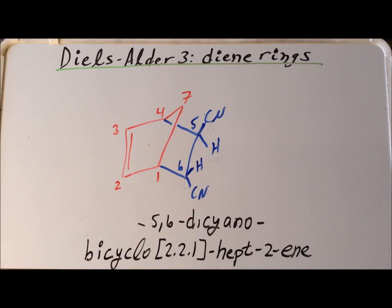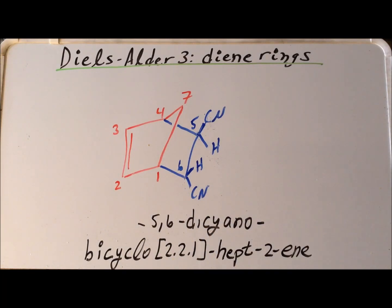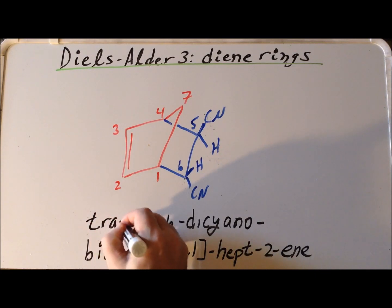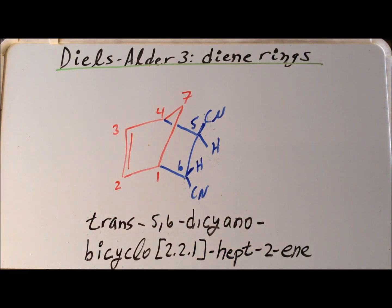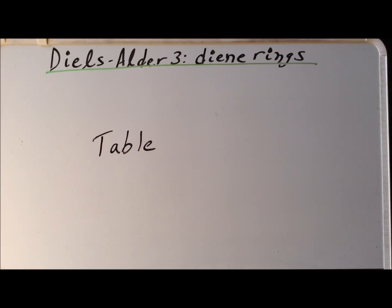If our dienophile is trans-1,2-dicyanoethylene, we end up with the cyano groups being trans to each other in the product — one pointing up relative to the ring and one pointing down. Therefore this gives us trans-5,6-dicyanobicyclo[2.2.1]hept-2-ene. Please see the following table which shows the energies of activation and the enthalpies of reaction for the various reactions mentioned in this video. I draw your attention particularly to the reduced energy of activation for the dicyano-substituted ethylene as the dienophile.